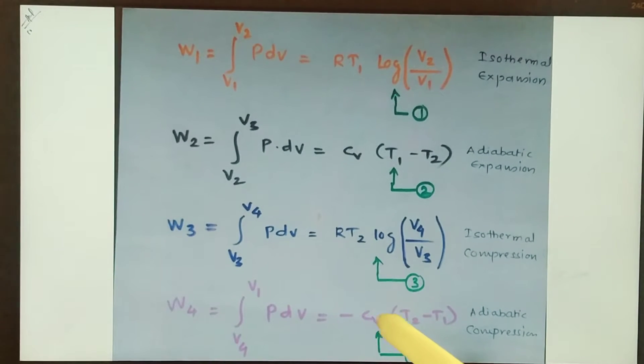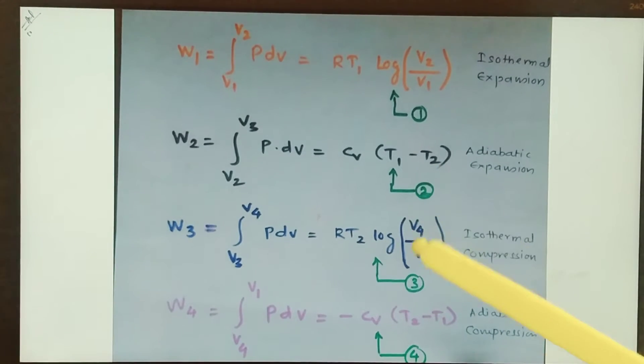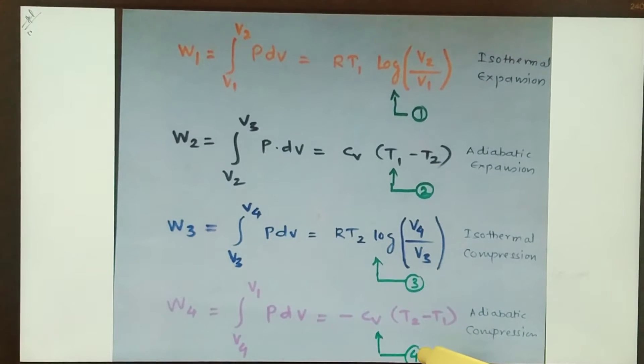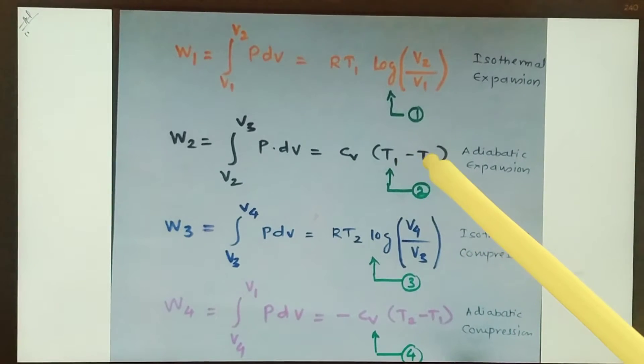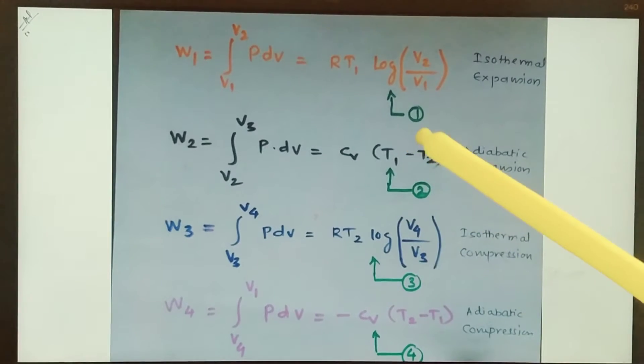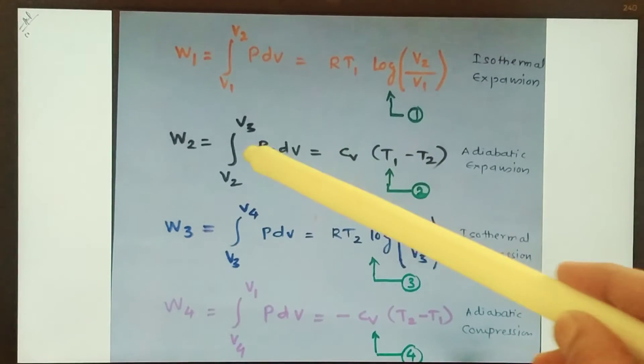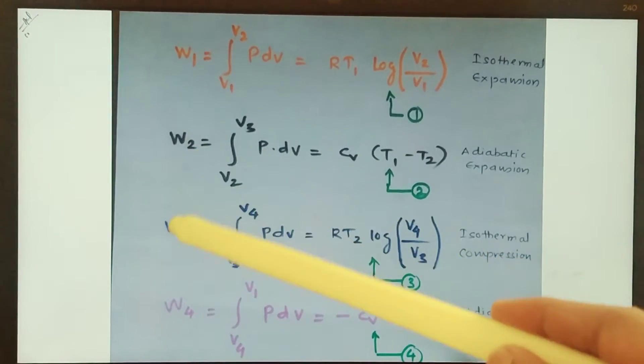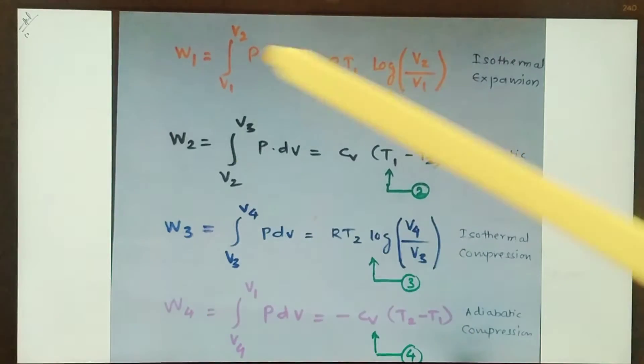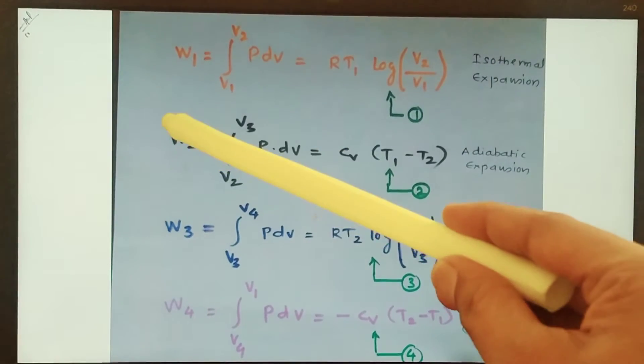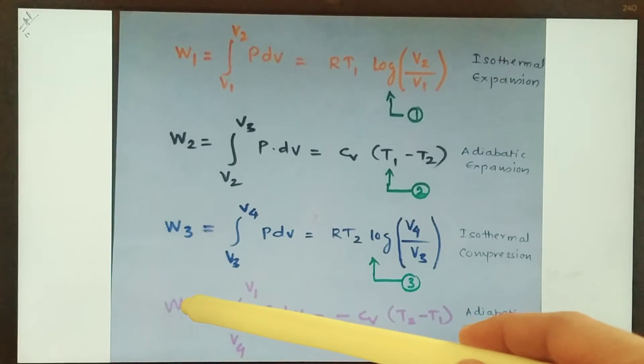It comes out to be minus Cv times T2 minus T1. If you compare equation number 2 and equation number 4, you will realize that here is T1 minus T2. Here it is T2 minus T1. So if you take out the minus sign common in this equation, you get T2 minus T1. So W2 will be minus times W4. Hence W2 will cancel out W4.